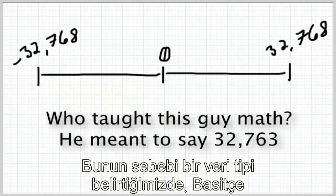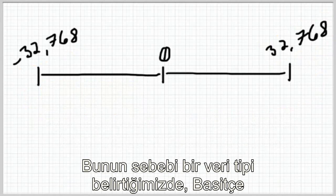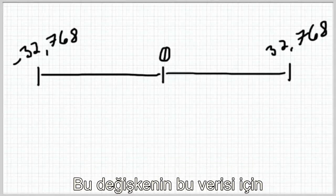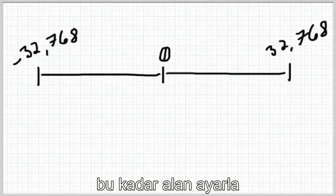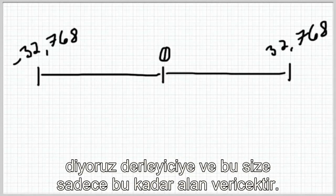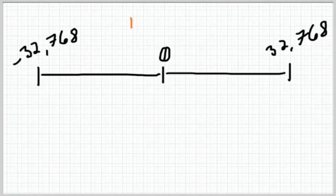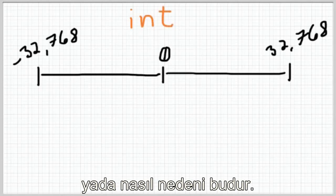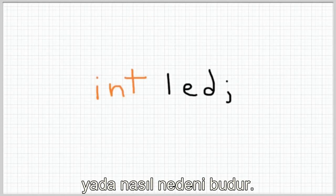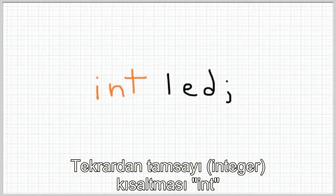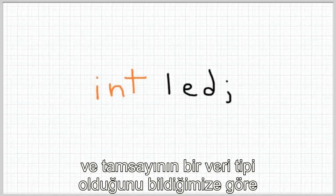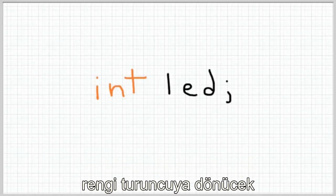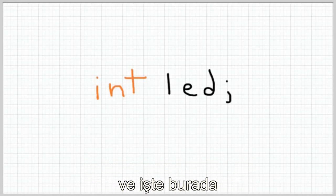If you subtracted 5 from negative 32,768 you'd get positive 32,762. The reason is that when we specify data types we're telling the compiler to set aside only so much space for that variable, and it will only allow so much space. We won't get too deep into those details, but that's the why behind the how. Integer is abbreviated 'int', and since integer is an Arduino data type it will change color to orange in the IDE.